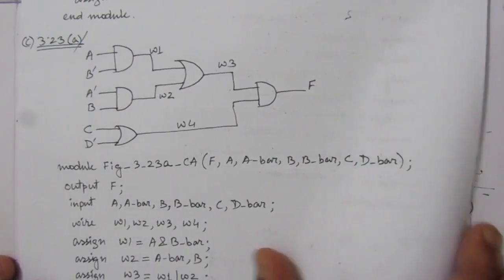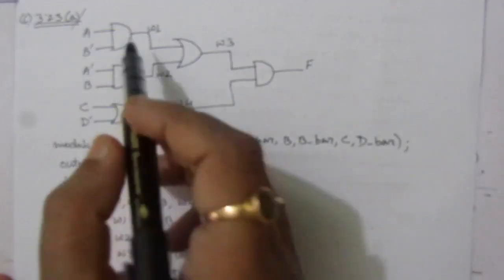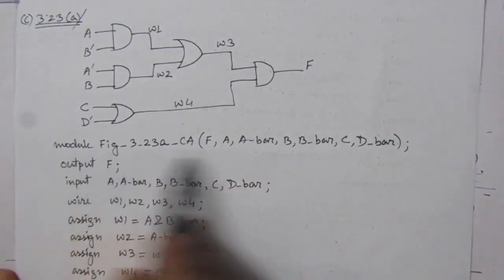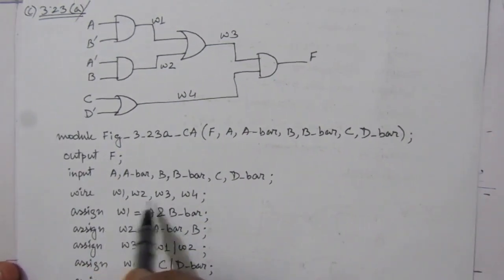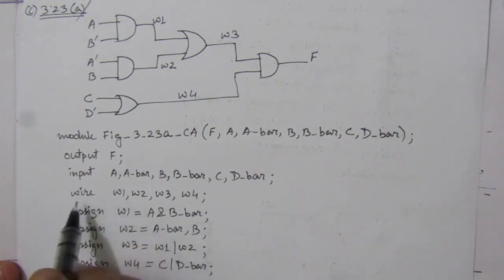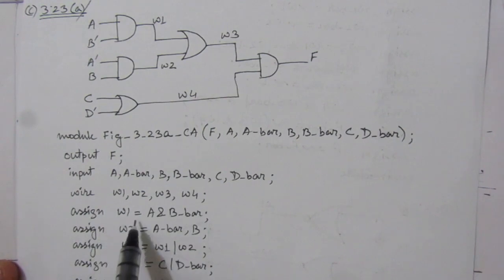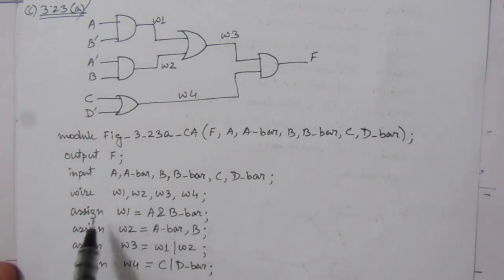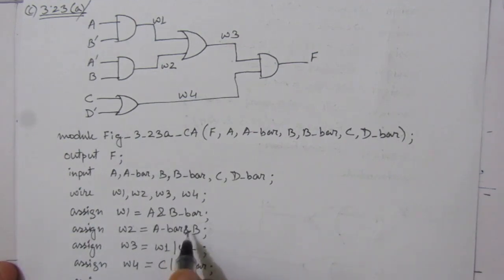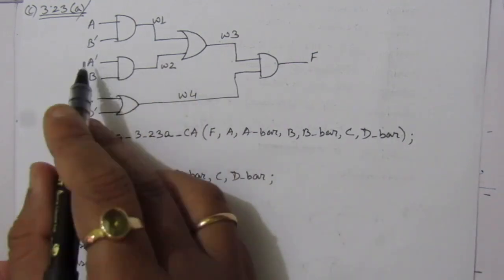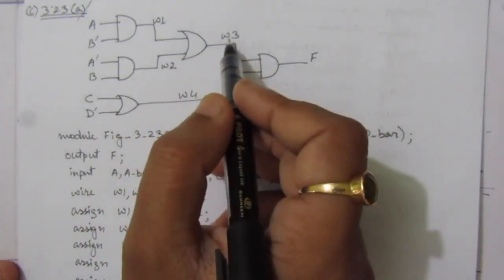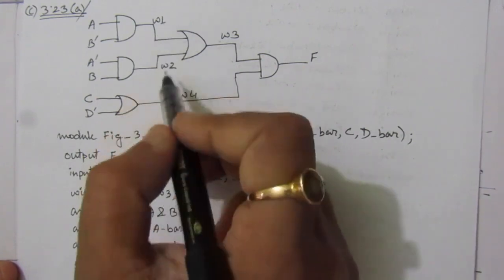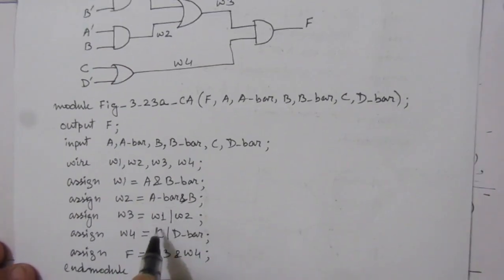In the third part, we are given this circuit with wires W1, W2, W3, and W4. Output is F and inputs are defined as before. We assign W1 as the AND operation between A and B-bar. W2 is the AND operation between A-bar and B. W3 is the OR operation between W1 and W2, so assign W3 = W1 OR W2.